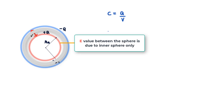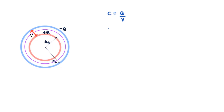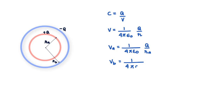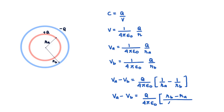The potential at any point outside a sphere is V = (1/4πε₀)(Q/r). So the potential at the surface of the inner sphere is Vₐ = Q/(4πε₀Rₐ) and at the outer sphere is V_b = Q/(4πε₀R_b). The potential difference Vₐ − V_b equals Q/(4πε₀) · (1/Rₐ − 1/R_b), which simplifies to Q/(4πε₀) · (R_b − Rₐ)/(Rₐ·R_b).